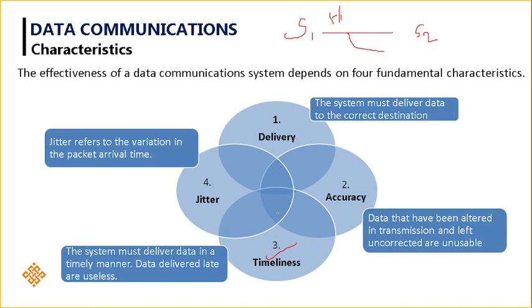These are the four basic characteristics of data communication. Delivery means the data should reach the intended destination. Accuracy means whatever data you are sending, the same data must be received with no modifications — data integrity must be maintained. Timeliness means data must be received within the fixed time. Jitter means there should be no variation in packet arrival time and data should be delivered in the correct sequence order. Hope you enjoyed the video. Thanks for watching and please subscribe to my YouTube channel for more videos.